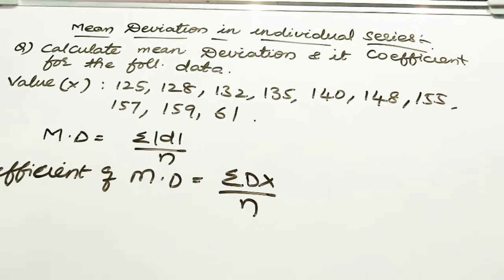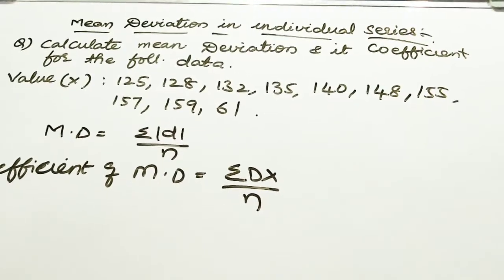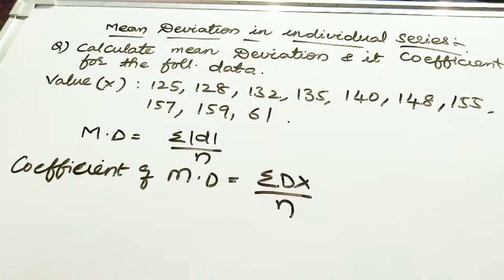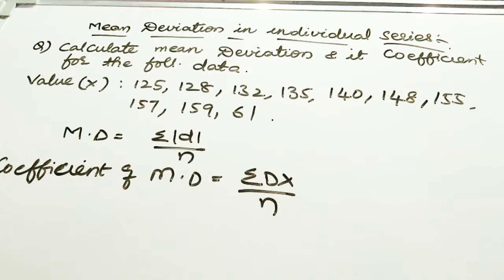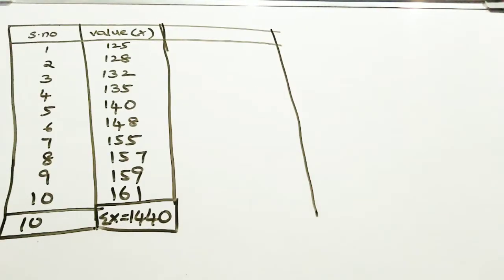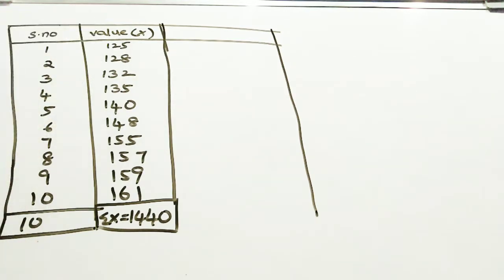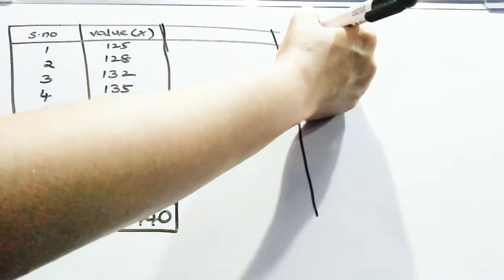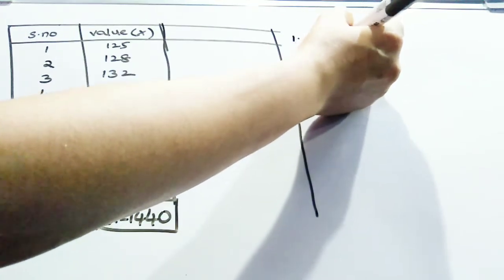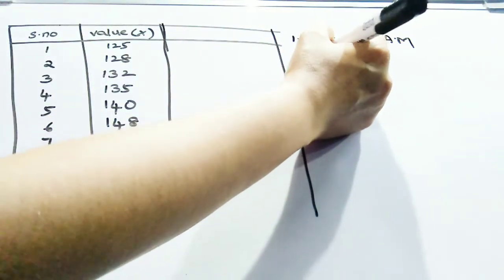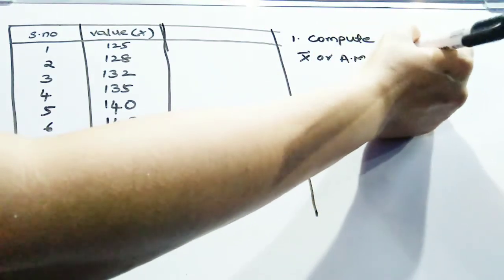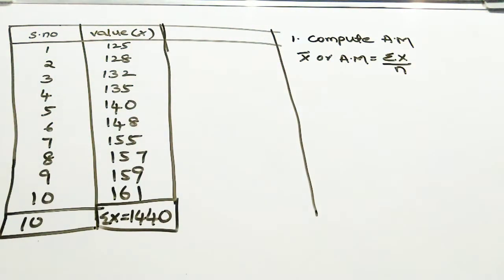Let us solve the problem. What is your first step? The first step is to find the averages. We have to list out all the values of x. The number of items N is 10. First step is to compute the arithmetic mean. The formula for arithmetic mean is: x-bar equals summation x by N. Summation x means the sum of all x values.